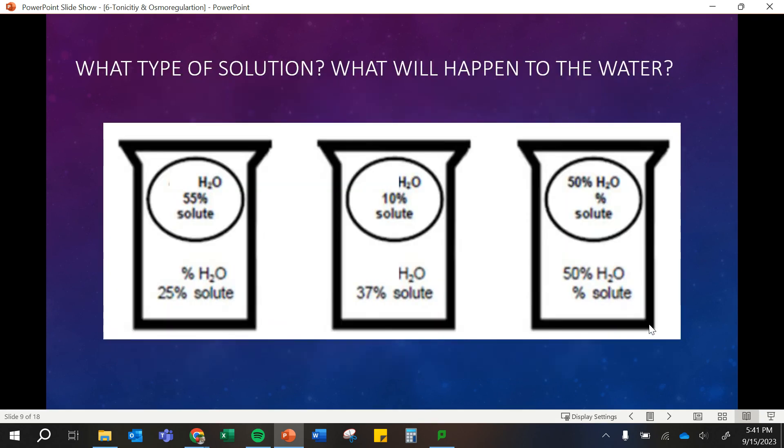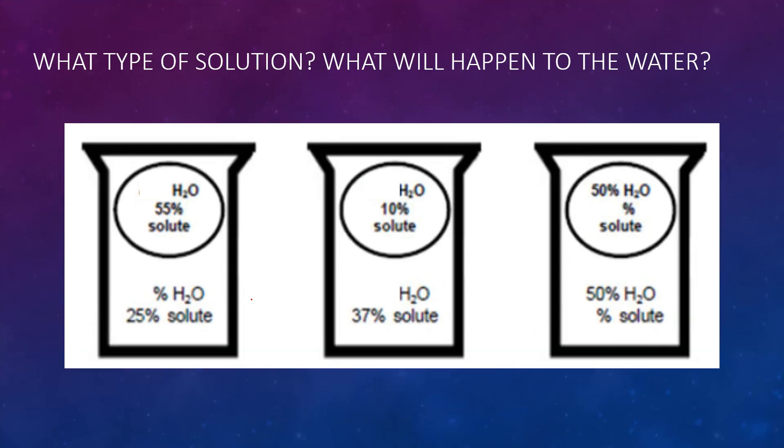Here's some practice examples. Identify what type of solution and what will happen to the water. So this first one, we have, they're always going to tell you the percent of the solute, not the percent water. But you can think about the water is going to be moving. So there's a higher percentage here inside the cell. So here we have a higher concentration inside the cell of the solute and lower outside. So because of that, the water is going to want to move into our cell. So it will cause that cell to swell, and that's because this is a hypotonic solution.